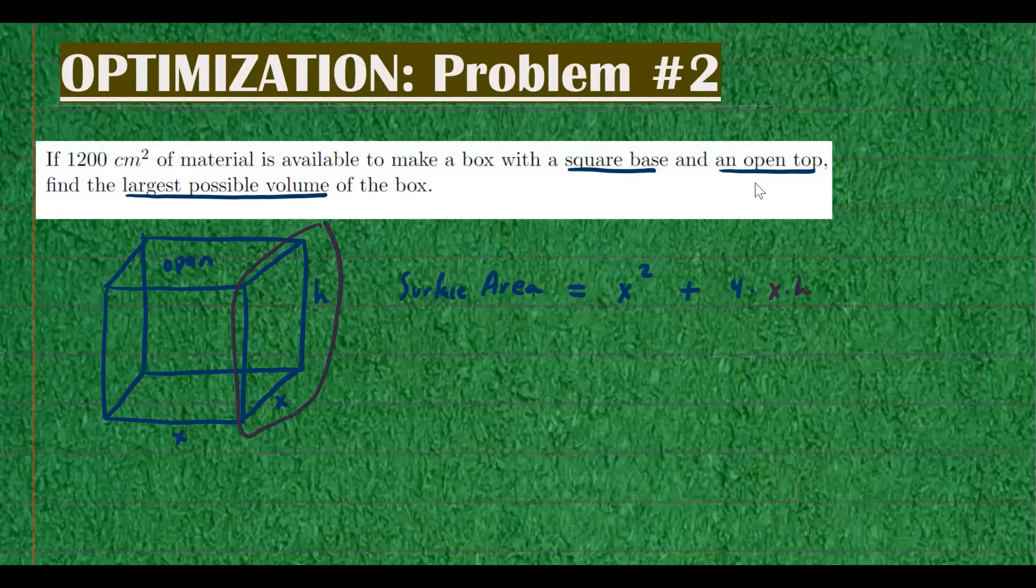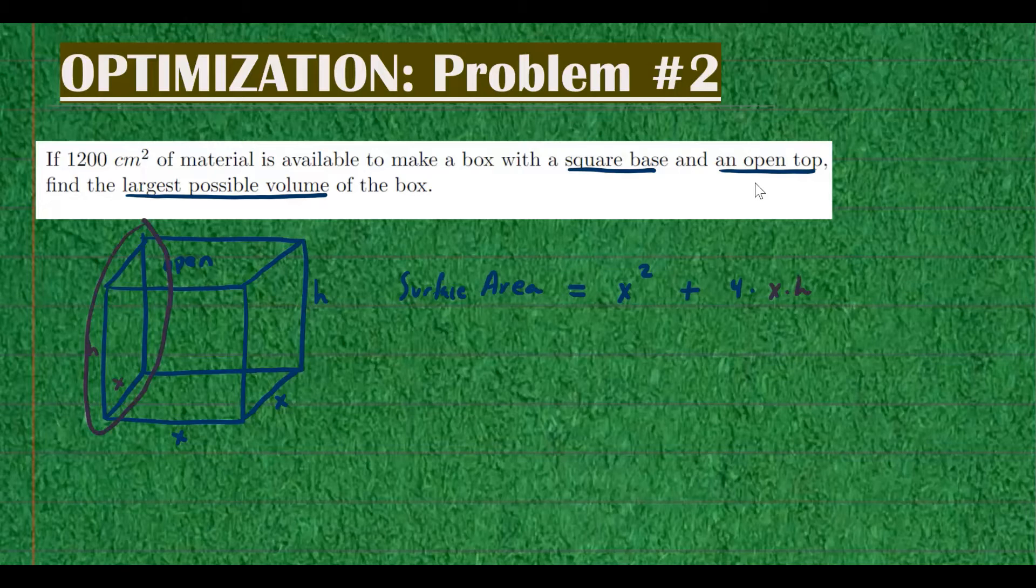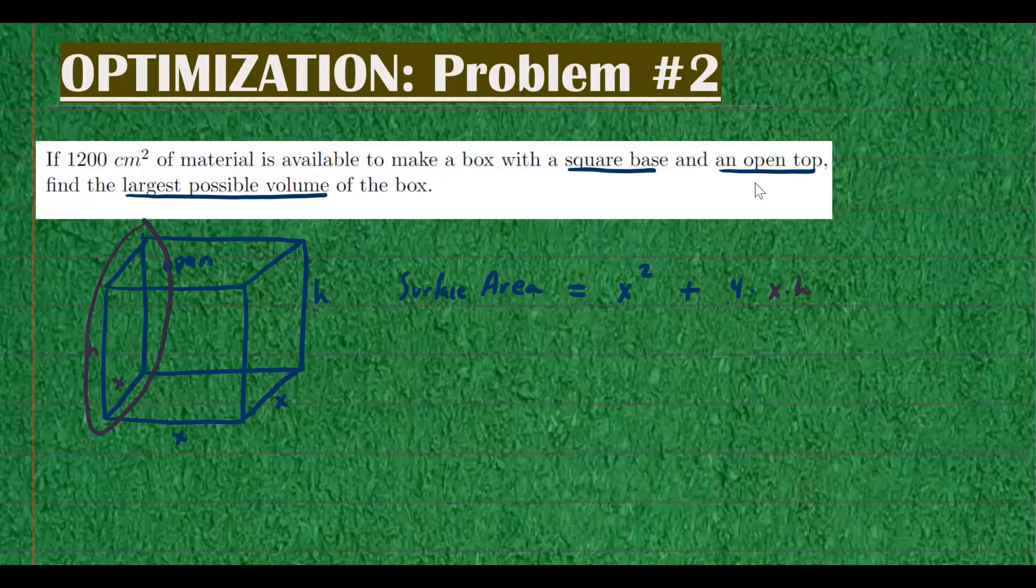And then if you focus on another surface, the left side of this box. Again, the length is x and the height is h. So that's another one. And then the front again, x times h, and then the back x times h. So we can say that there are four sides: front, back, left, right.